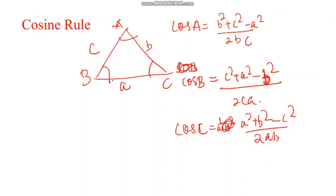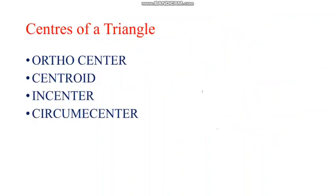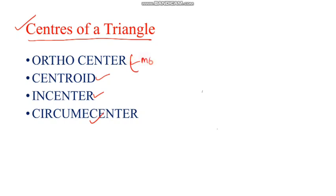Then come to a very, very important point — that is the centers of the triangle. One is the ortho center, another is the centroid, then the in-center and circum center. The ortho center is the intersection point of the altitudes — that means the heights of the triangle.